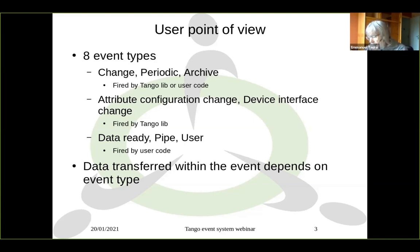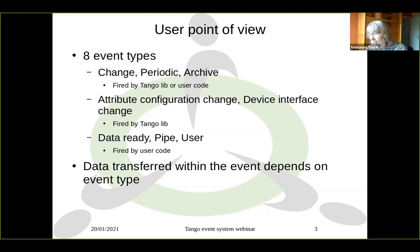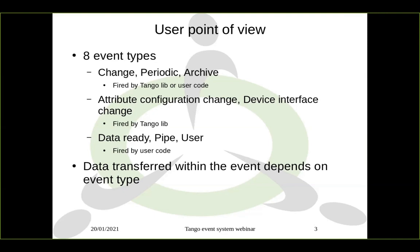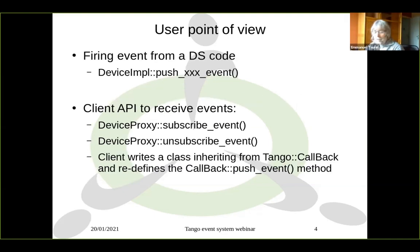The event could be fired automatically for you by the library, or you can push them from your code — it depends on the event type. For instance, the attribute configuration change event cannot be fired by you; it is fired by the library. But on the other hand, if we take the example of the data ready event, this one is fired by your code. To fire events from your code, you use the method of the device implementation class: push_[event_name]_event. To receive events on the client, you use device proxy's subscribe_event or unsubscribe_event methods.